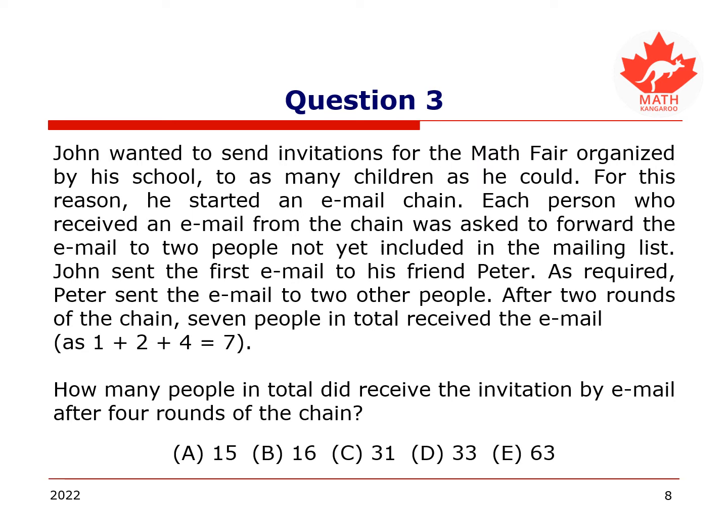In this third question, we are asked to consider John, who wants to send as many invitations as possible to the children of his school for the math fair. He started an email chain where each person who received an email was asked to forward it to two people not yet included in the mailing list. John sent the first email to his friend Peter. After two rounds of the chain, seven people in total received the email, as 1 plus 2 plus 4 equals 7. How many people in total received the invitation by email after four rounds of the chain? I encourage you to pause the video to attempt the problem on your own.